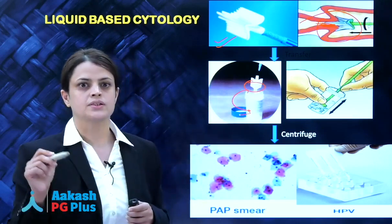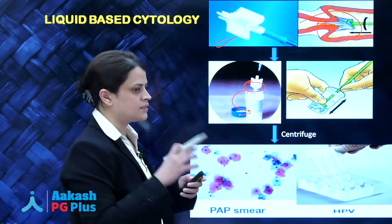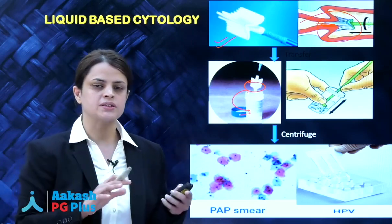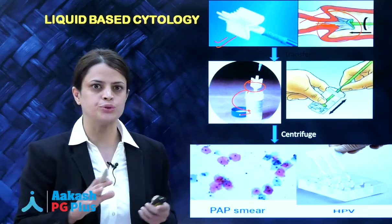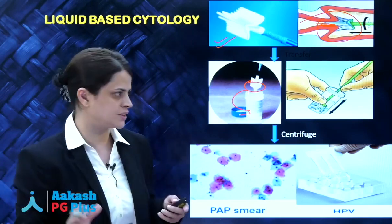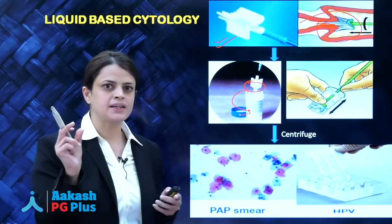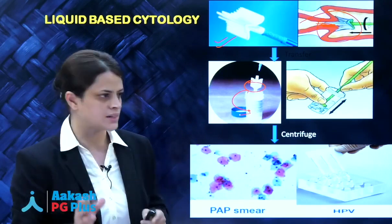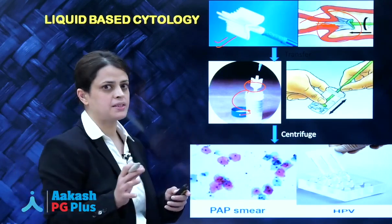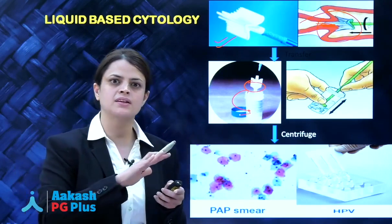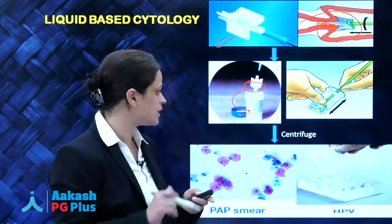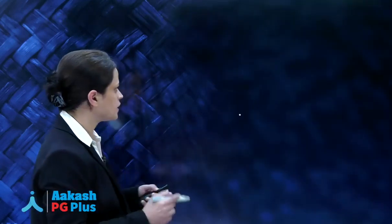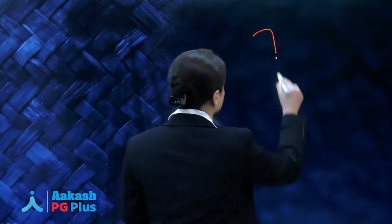The preservative solution with cells suspended in it is taken to the laboratory, where it is filtered and centrifuged to remove all mucus, debris, and artifactual material. The pellet obtained after centrifugation contains all the desquamated cervical cells. This pellet is then used to prepare a thin, even smear on a slide, and the pellet can also be used for HPV testing.